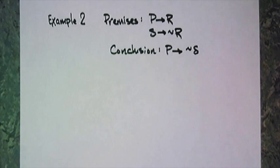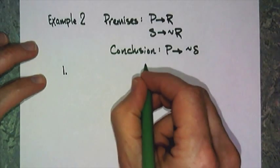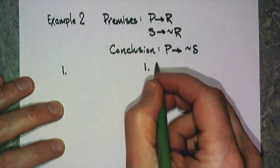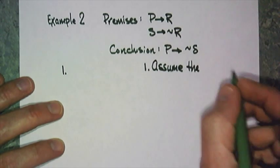Here is our example. Our premises are if P then R, if S then R, and our conclusion is if P then not S. You may notice I probably could do this directly - I'm going to do it as a conditional proof so you can have a nice easy example. The first line for every conditional proof is to tell the reader this is a conditional proof, and the way I'm going to do that is I'm going to assume something. What am I going to assume? I'm going to assume the antecedent is true.